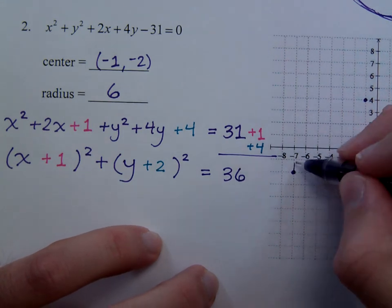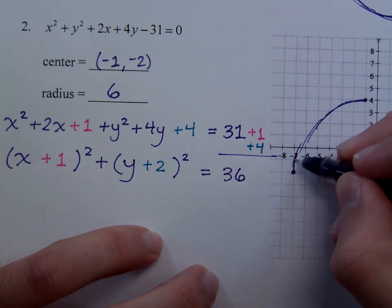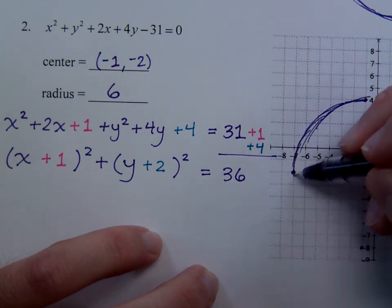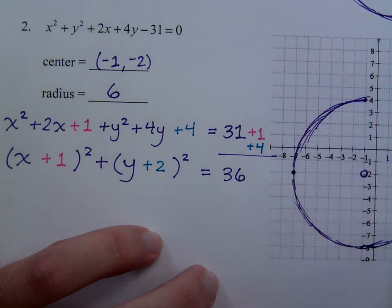And then we just draw on our circle. Oh, let's see. So this is where maybe if you have like a nice thick pencil or marker, you can kind of make up for some errors here. There we go.